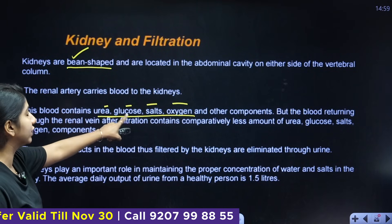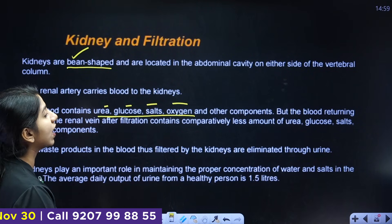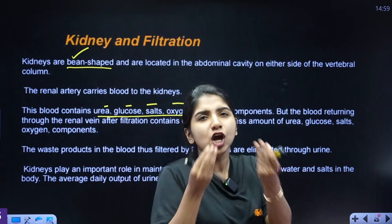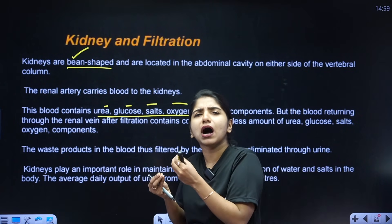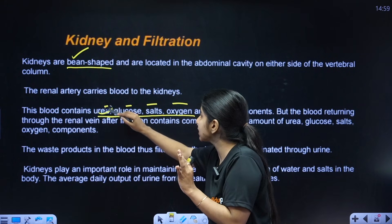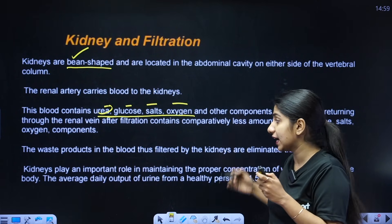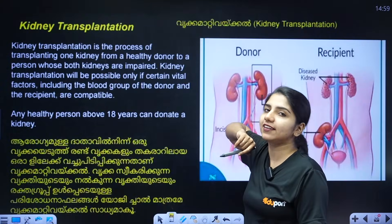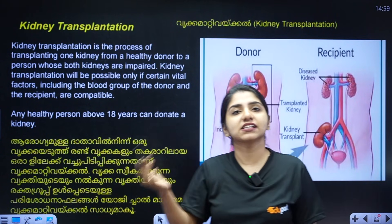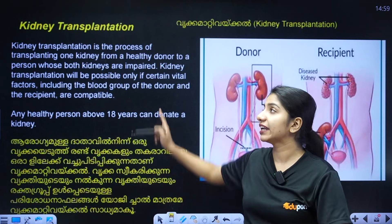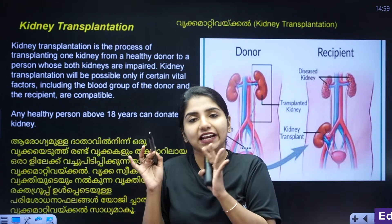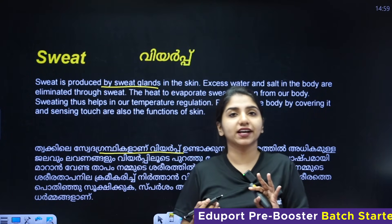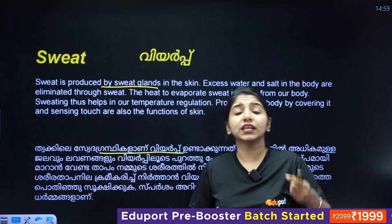Blood returns through the renal vein after filtration. It contains comparatively less amounts of urea, glucose, salt, and oxygen. Urea and salt may be a little harmful, so the kidney filters them out. Treatments for kidney failure include dialysis and kidney transplant.